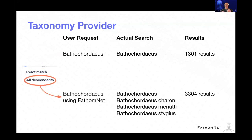Or you could say, I actually want to extend that search — I want to train this model on all types of Bathycordeus. You'd search for Bathycordeus using the FathomNet taxonomy provider, and under the hood it will take that genus, expand out, walk the tree, grab all the different types of Bathycordeus, expand the search to all those types, and return the matching results. In this case we now get 3,300 results.